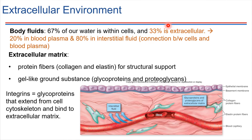Extra meaning outside of. Looking at the breakdown of water outside of cells: about 20% is in the blood plasma, and the remaining 80% is in interstitial spaces — the spaces between cells, but not in the blood. This interstitial fluid provides a connection between cells and the blood plasma. There has to be a lot of transport that takes place through that interstitial fluid, and that is in large part what our focus is on in this chapter — how do things get transported through the interstitial fluid and make their way into cells.